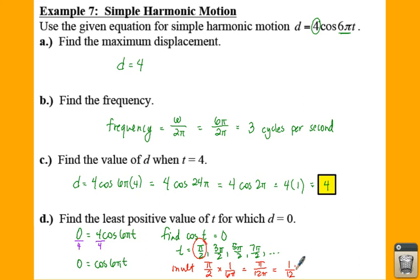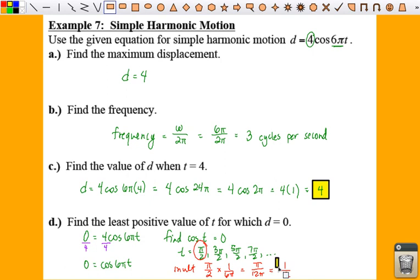So that means that your least positive value of t for d equals 0. This is the smallest value you can go and still get a 0 when you plug it in. So if you plug 1/12 in for t, 6 pi times 1/12 would give you pi over 2, which would give you cosine of pi over 2 is 0. 0 times 4 would give you 0. That's the smallest value. You can't plug in like pi over 4 or pi over 6 or anything like that to get a 0. But your smallest value would end up being 1/12.